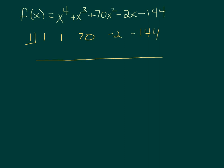We bring down and multiply, add, multiply, add, multiply, add, multiply, and add. These results are not all the same sign, so positive one is not an upper bound. Let's move on to the next integer.